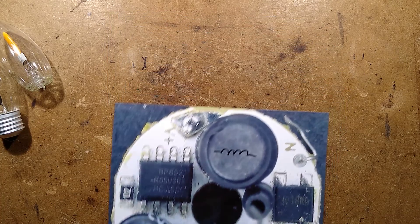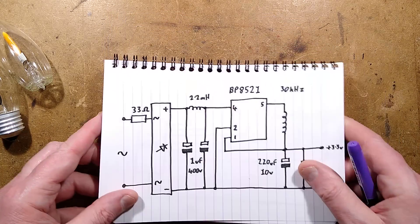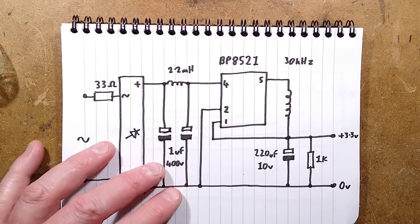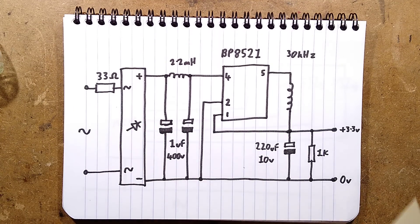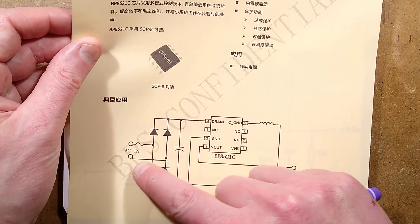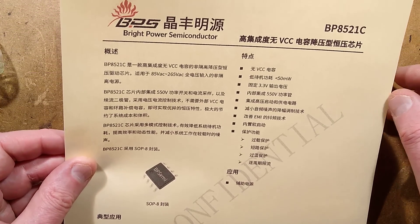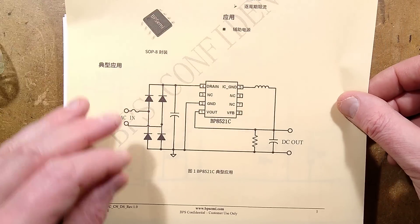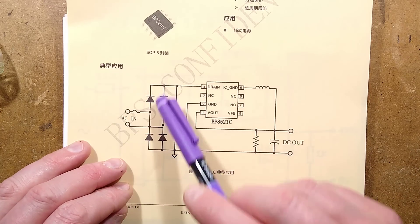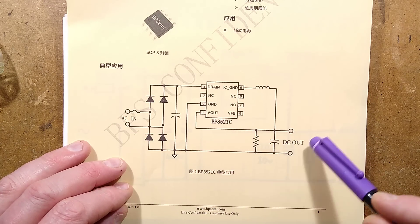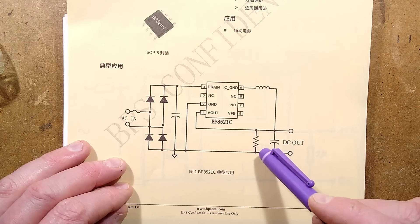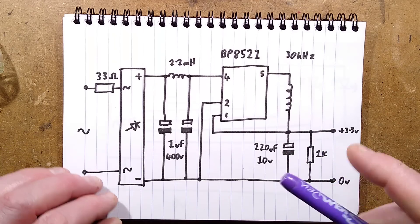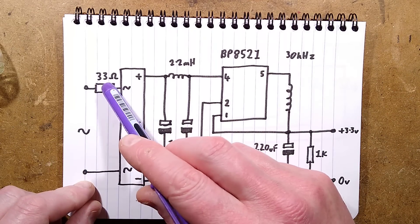I shall show you the schematic and how it differs from the official schematic. Here is the Bright Power data sheet. There's the reference to 3.3 volts. Here is the schematic showing the bridge rectifier, smoothing capacitor, the chip itself, output capacitor, inductor, and the resistor. But the main differences here are they have added that extra protection of the inrush limiting 33 ohm resistor that also acts as a fuse.